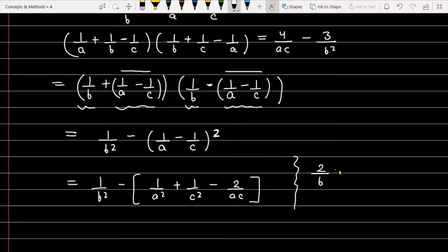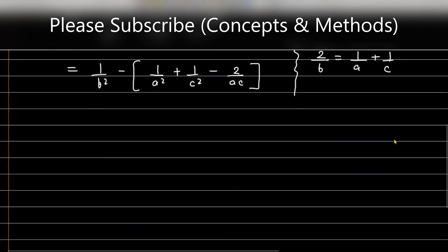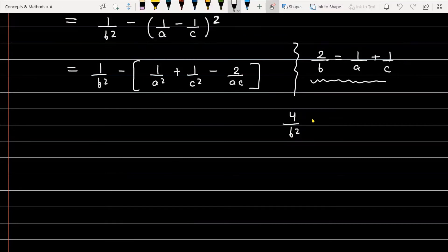Squaring both sides of 2/B = 1/A + 1/C, the left-hand side gives 4/B², and the right-hand side gives 1/A² + 1/C² + 2/AC. We use this result because we need to substitute for 1/A² + 1/C², which appears in our expanded expression.